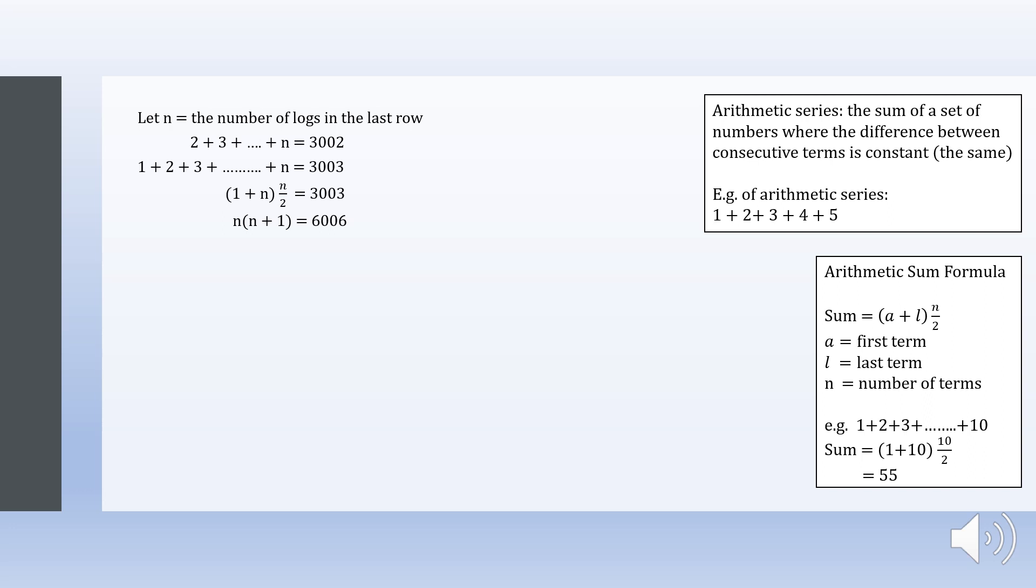To figure out what n is, we have to test the products of two numbers. 70 times 70 is 4900, and 80 times 80 is 6400. This means that these two consecutive numbers must be in between 70 and 80.